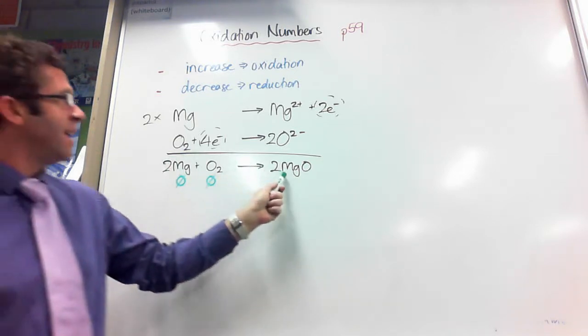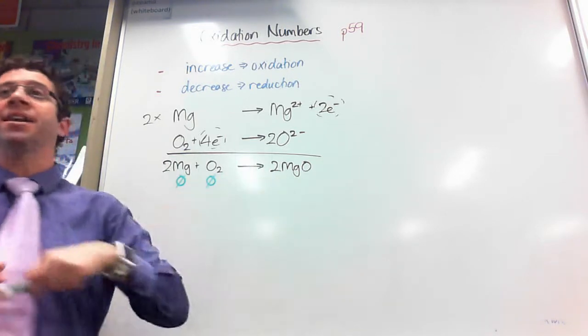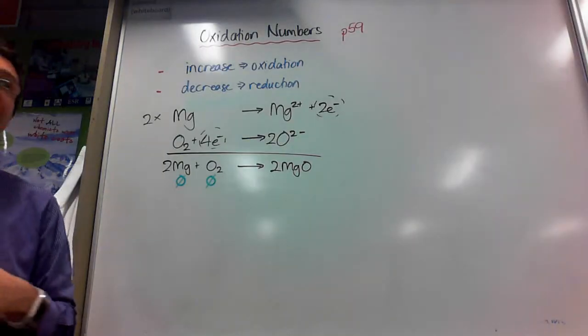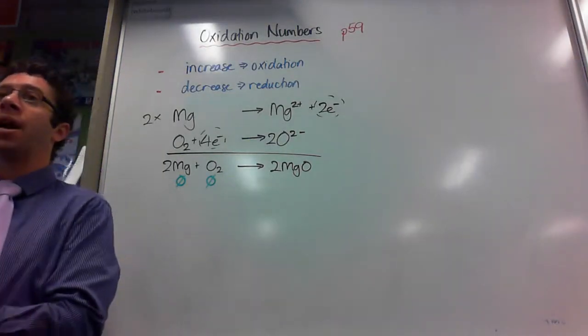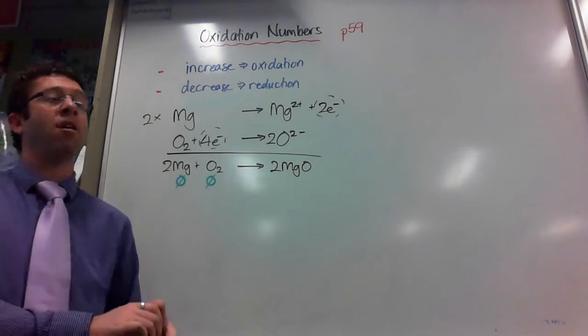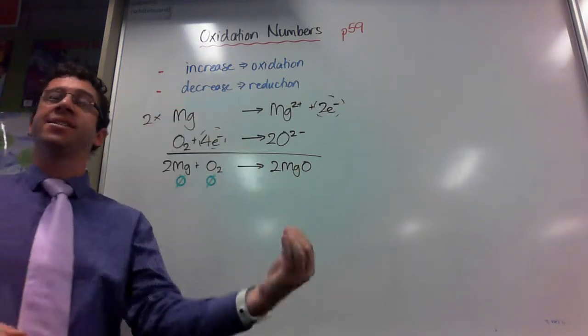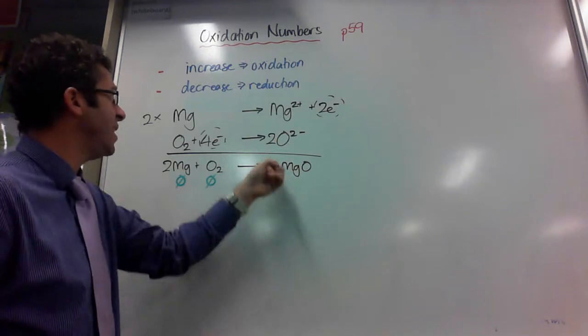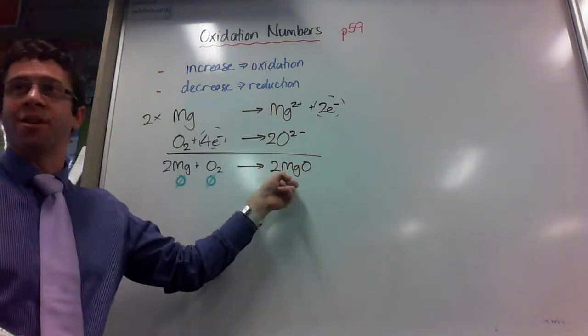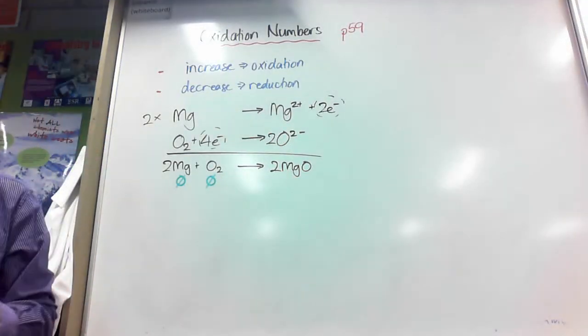Then, if I have a look at this, the magnesium has become magnesium two plus. Plus, any ion made up of just one element, what we call a monatomic ion, its oxidation number is its charge. So, the magnesium, as I see out here, is a two plus ion.